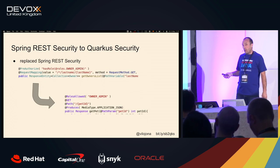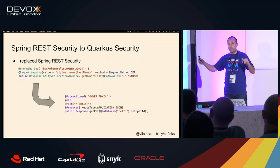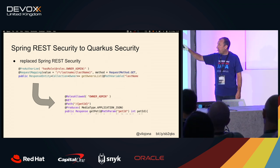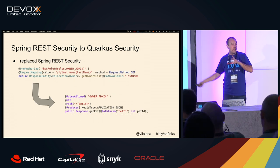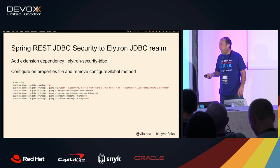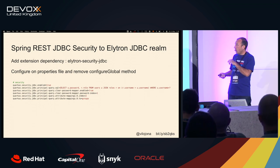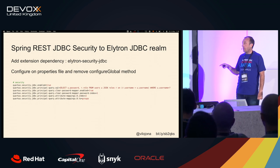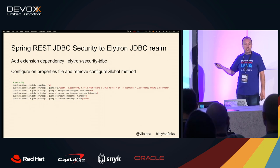Regarding Spring Security — in Quarkus, we have @RolesAllowed, where we specify the roles that are allowed to call the method. And in Spring we have @PreAuthorized with an expression language. In this case the security was stored in a database, so we need to use Elytron JDBC, and then configure in the properties file where the security is stored.